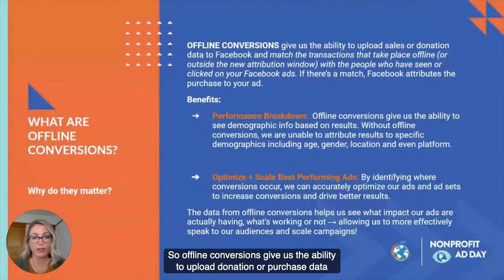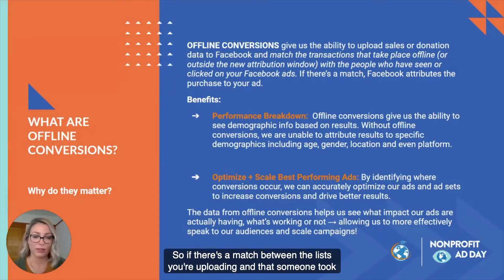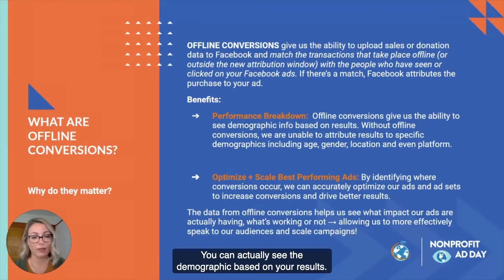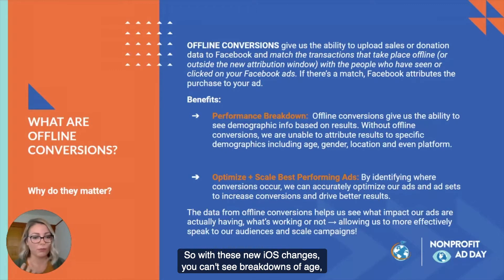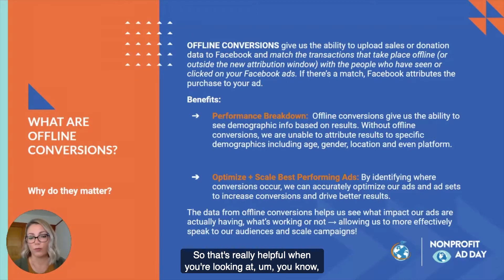Offline conversions give us the ability to upload donation or purchase data to Facebook and match those transactions taking place offline or outside that attribution window with people who have seen or clicked on a Facebook ad. If there's a match between the list you're uploading and someone who took that action, Facebook will attribute that purchase to your ad. One benefit is a performance breakdown — you can actually see demographics based on your results. With the new iOS changes you can't see breakdowns of age, gender, location, or platform, but when you upload these offline conversion lists, you can. That's really helpful when looking at the audiences you're speaking to and what's resonating with them.